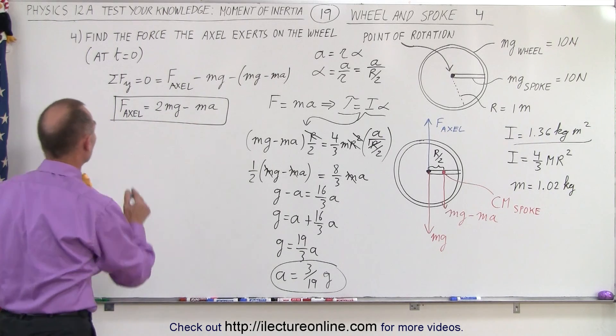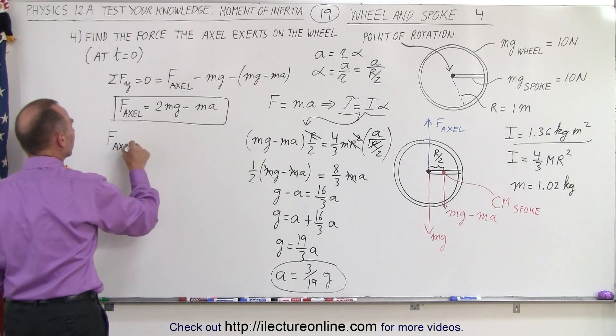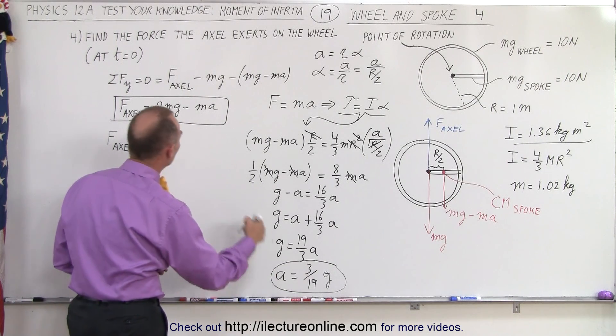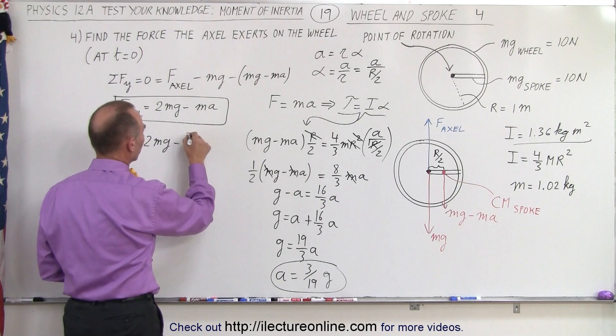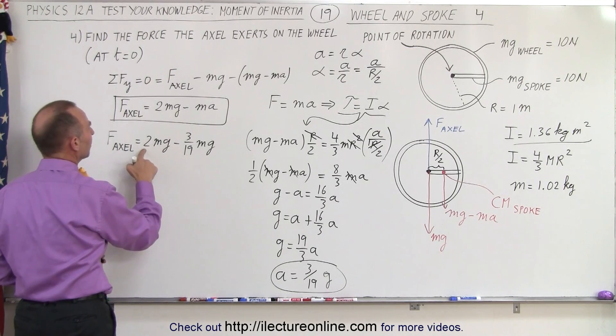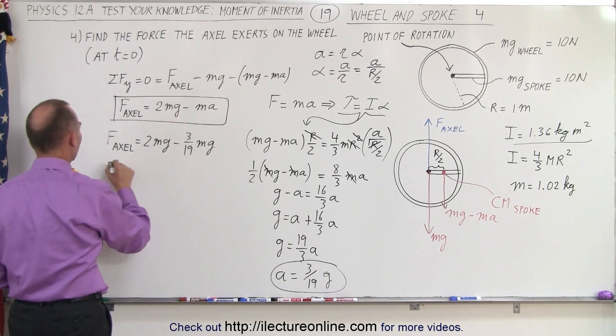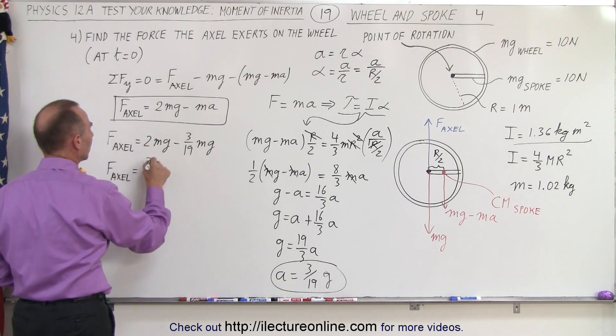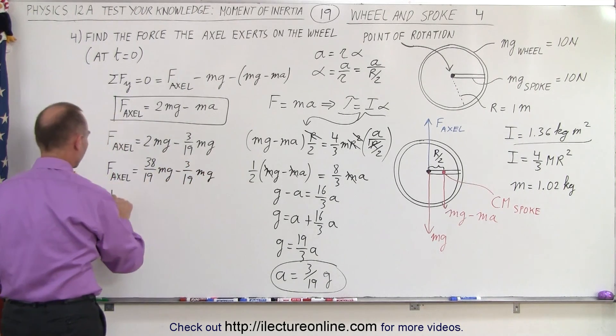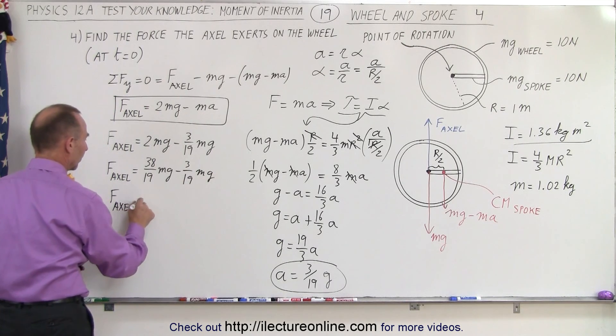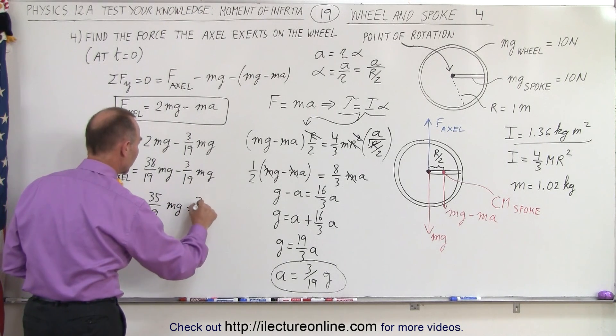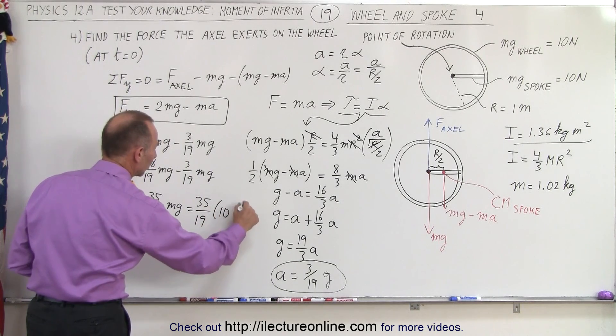Now we can plug that in here and see what we get. So the force of the axle exerting on the wheel is equal to 2 times mg minus ma, and a is 3/19 g. That would be 3/19 mg, so that would be 38/19 minus 3/19. So F on the axle is equal to 38/19 mg minus 3/19 mg. So of course, the force on the axle is then going to be equal to 35/19 mg. And since mg is 10 newtons, that would be 35/19 times 10 newtons.